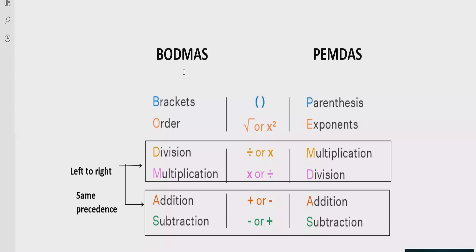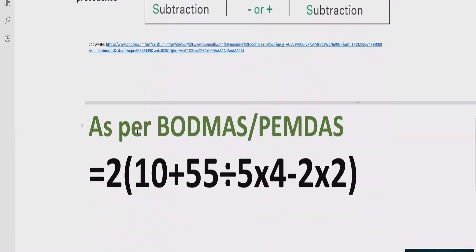Step three: you have to solve division and multiplication. Both have similar precedence, so you can solve whichever comes first going left to right. Similarly for addition and subtraction, we have the same rule — solve addition first if it comes first, and subtraction first if it comes first, going left to right.